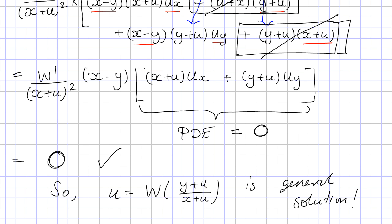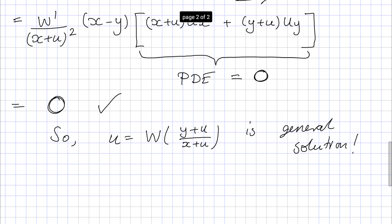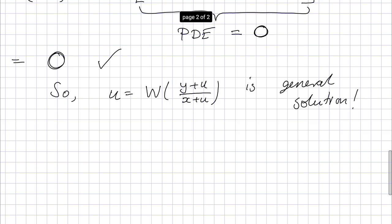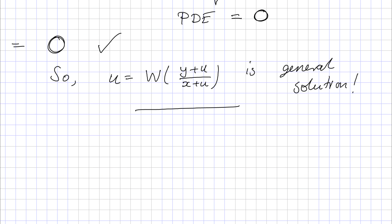The idea is that if we've found the general solution properly, we should be able to substitute it back into the PDE and show it really is a solution. That's how it works in the quasi-linear case. What's tricky here is that the general solution is in implicit form, so you have to work a little harder than you might have hoped.